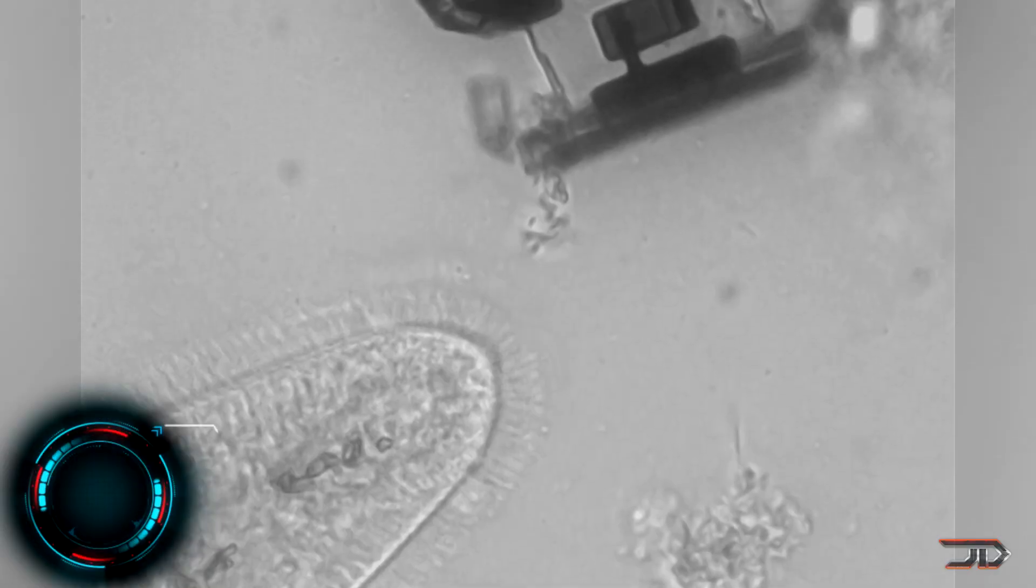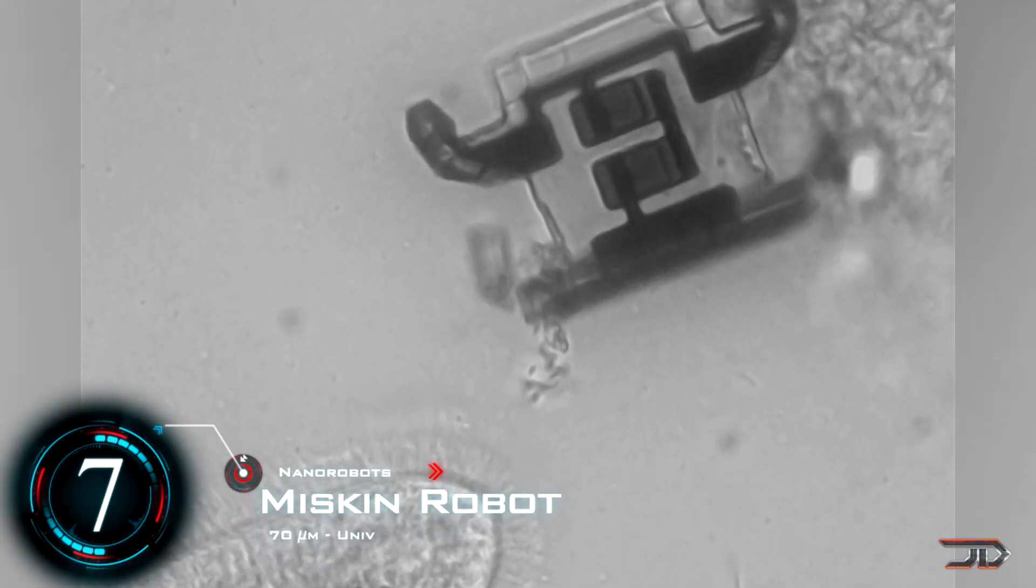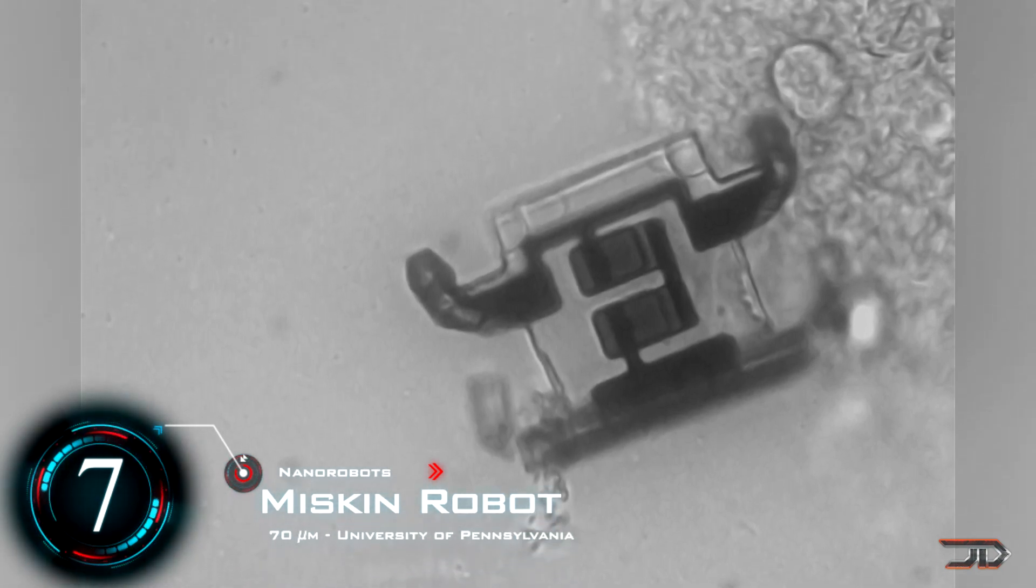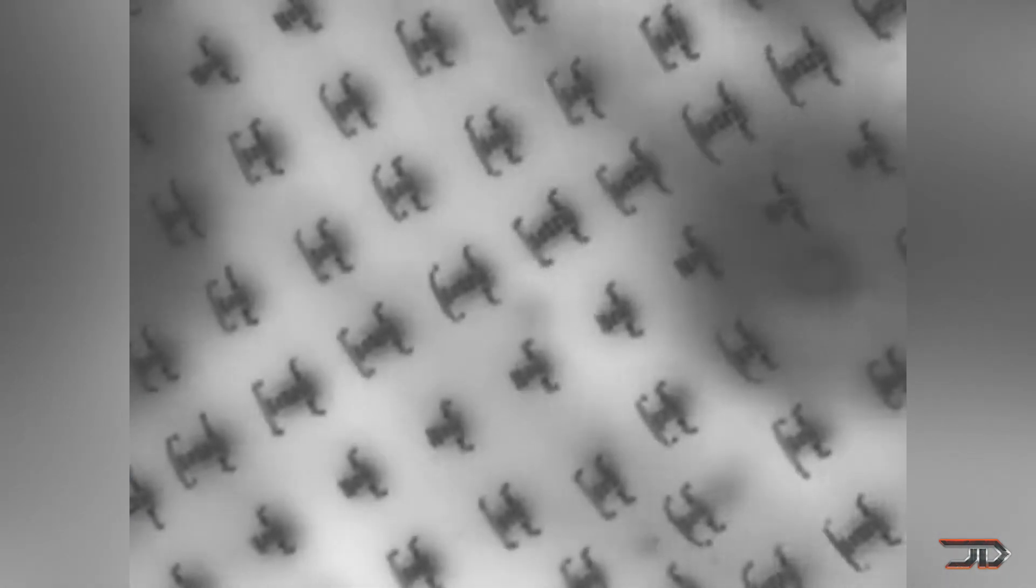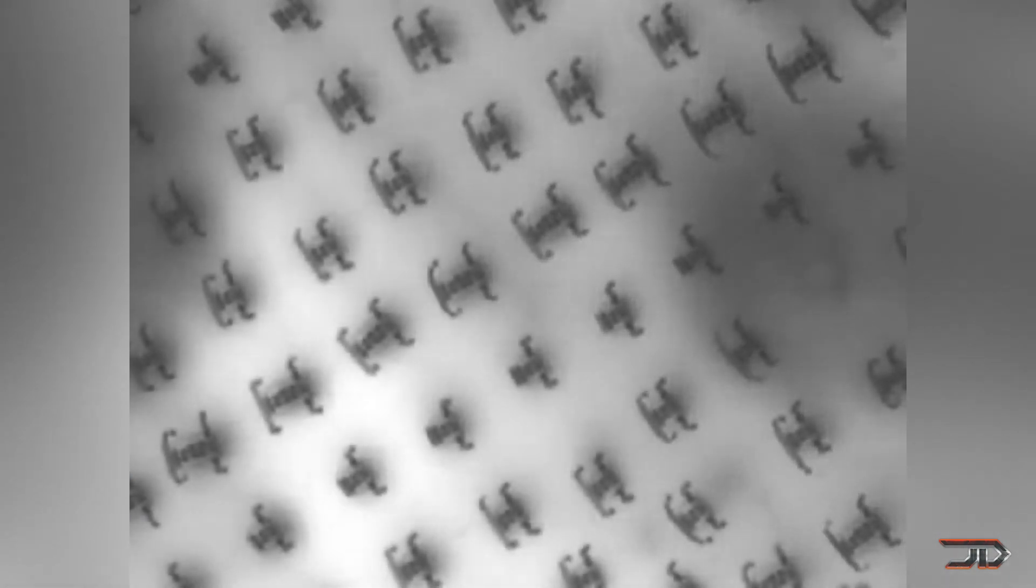We will start off with something I covered before and get to number 7, which is the Miscin robot. And yes, I will admit that this is a little bit bigger than nanoscale. Nevertheless, these are fascinating robots which are mass produced on a silicon wafer, and each are roughly 70 microns long.